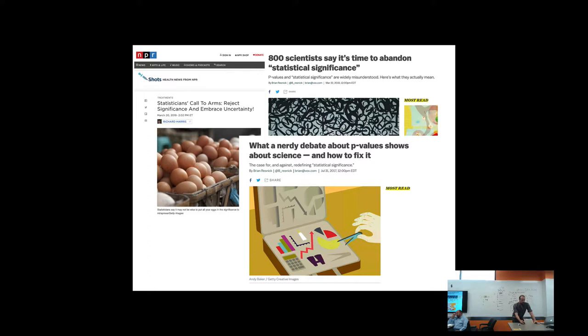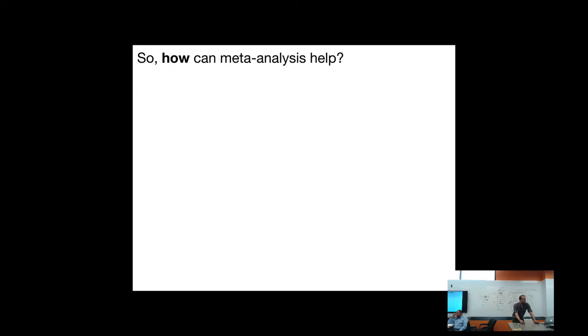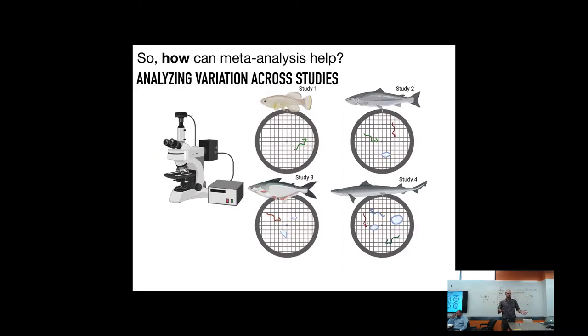So in our context, how can it help? To give you an obvious sense, imagine we have several studies done that look at prevalence and are performed in different species. I'm definitely not a fish marine ecologist or fish ecologist, so these are some different fish.